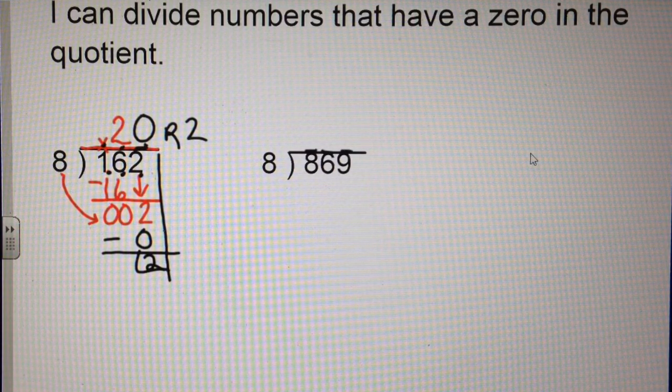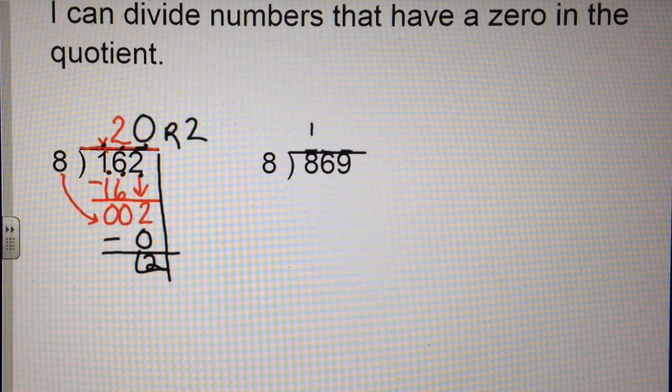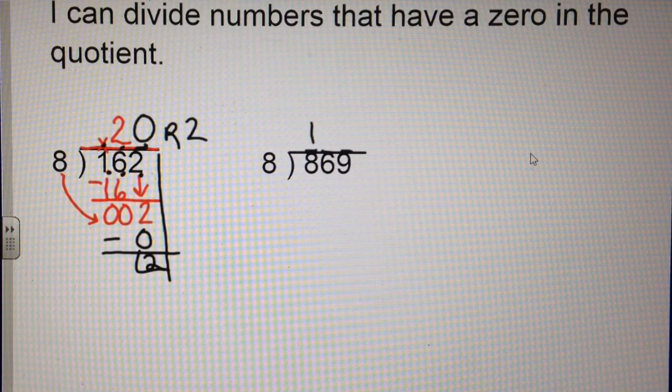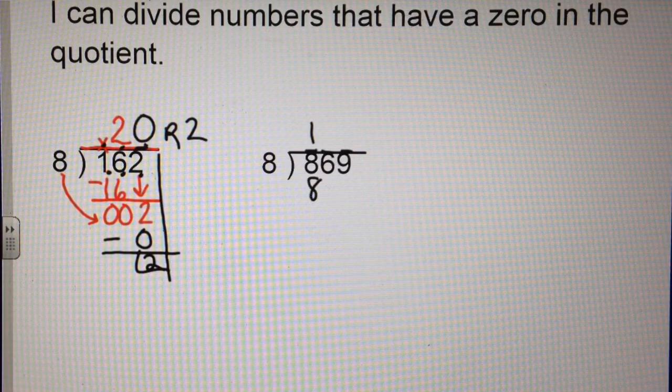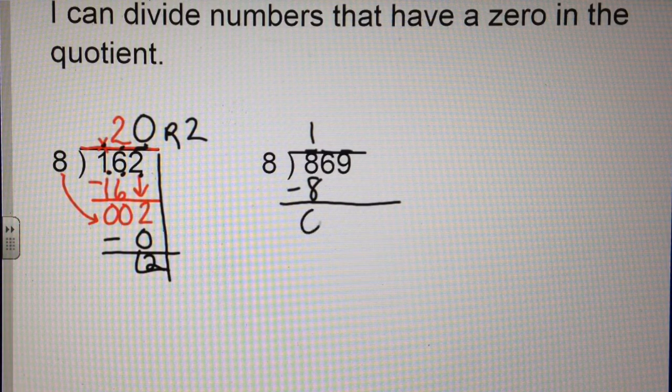The first thing I'm going to do is divide 8 into 8. 8 goes into 8 one time. 1 times 8 is 8. I subtract. 8 take away 8 is 0.